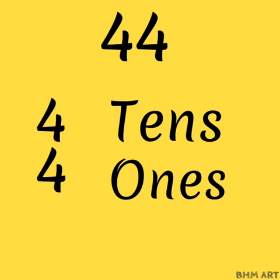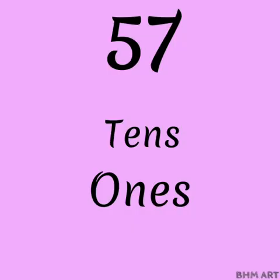The number towards the right is 1s and the number towards the left is 10s. The next number is 57. 5-10s, 7-1s.